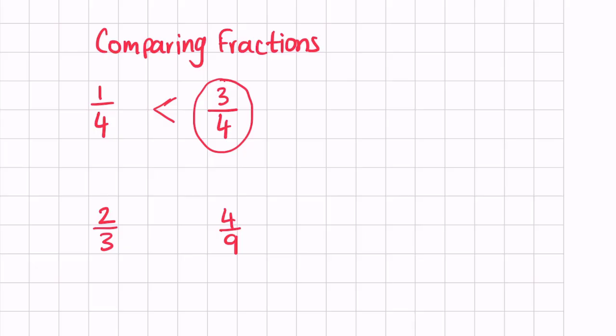In order to make the fractions' denominators the same, we need to multiply two thirds by three — multiply the numerator and the denominator by three so that the fraction is out of nine. Three times three is nine and three times two is six. Now that the denominators are the same, we can compare the numerators. Six ninths is bigger than four ninths, so we can say two thirds is the larger fraction.